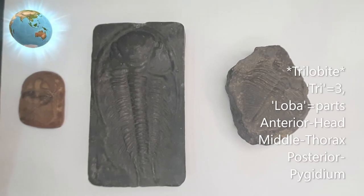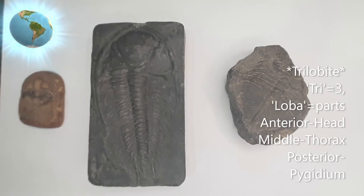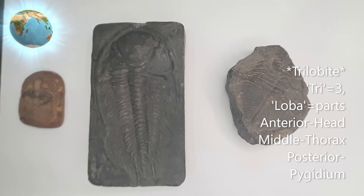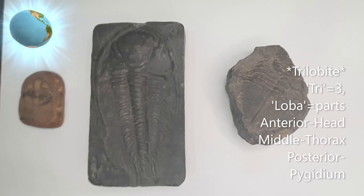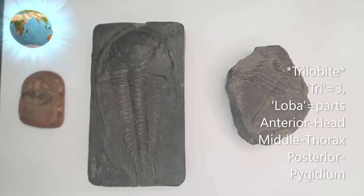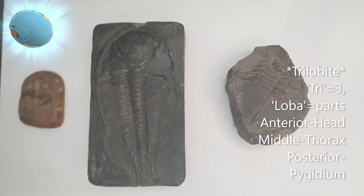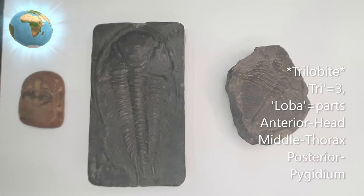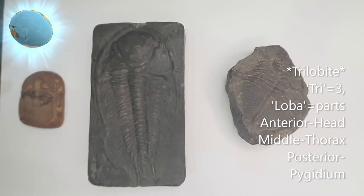Looking at their geographic distribution, we can say that they were the most successful animals, distributed all over the ocean floor — mainly their natural habitat, that is ocean water. They flourished for a total time of 300 million years all over the ocean floor, making them highly successful animals.